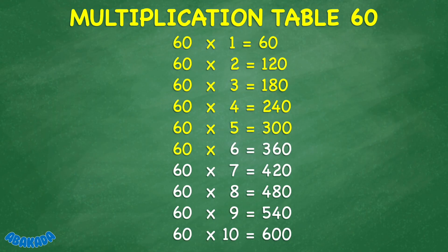60 times 6 equals 360. 60 times 7 equals 420. 60 times 8 equals 480. 60 times 9 equals 540. 60 times 10 equals 600.